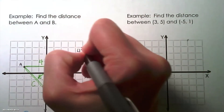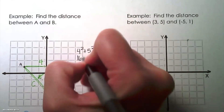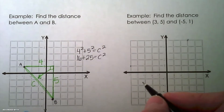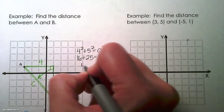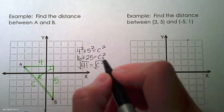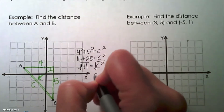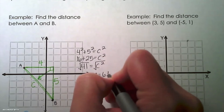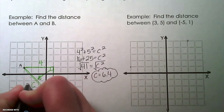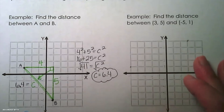So we do 4 squared plus 5 squared equals C squared. 4 squared is 16, 5 squared is 25, so 16 plus 25 equals 41 equals C squared. Taking the square root of 41 gives us C equals 6.4 as the length. We double-check that number — 6.4 is larger than both other sides, so we know we've done an accurate calculation.